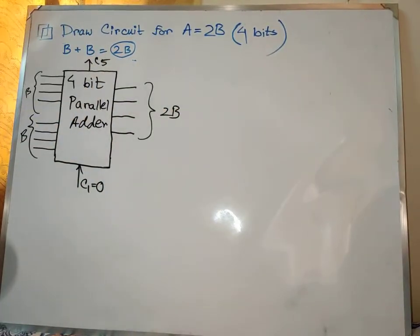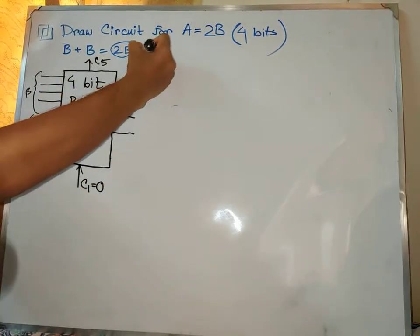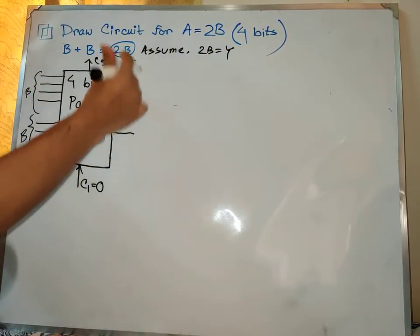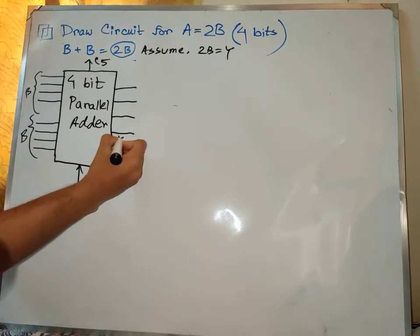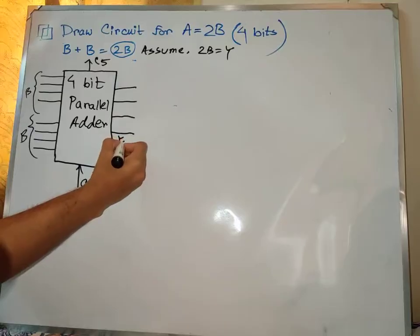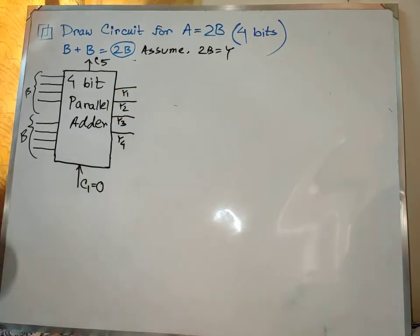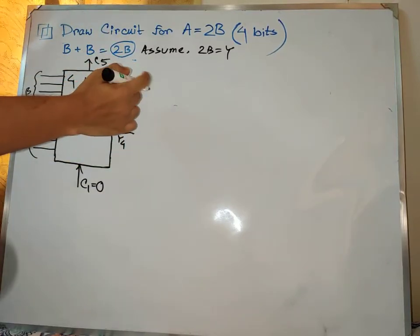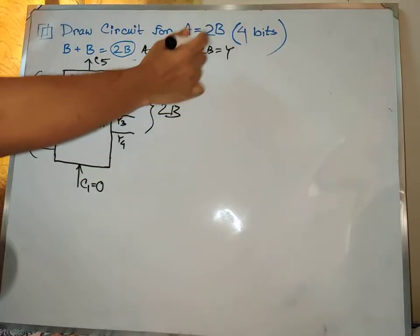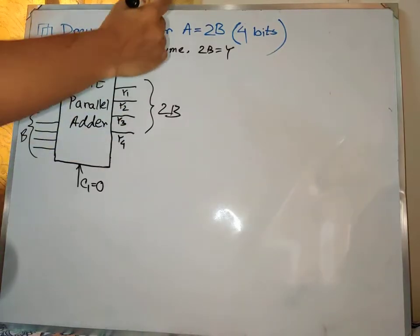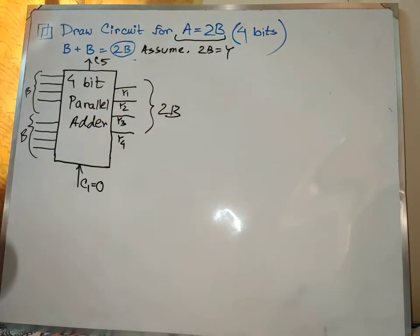I will give you the result. Let's assume 2b is equal to y. I will show you the output. Let's number it y4, y3, y2, and y1. I will give input b, b, b — and that gives 2b. So 2b is equal to y, that's why I will give numbering y4, y3, y2, y1. I will also give a equal to 2b equal to x using the adder circuit.